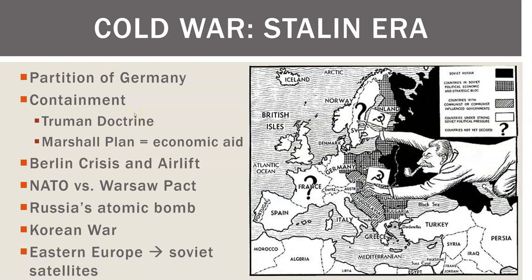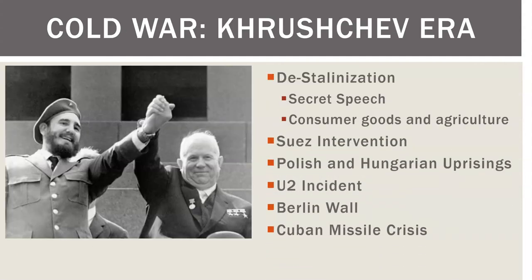Eastern Europe, as Churchill called it, is behind an iron curtain. In the James Bond movies they'd say, 'Is this behind the iron curtain?' — meaning going into a communist country. These countries are known as Soviet satellites.